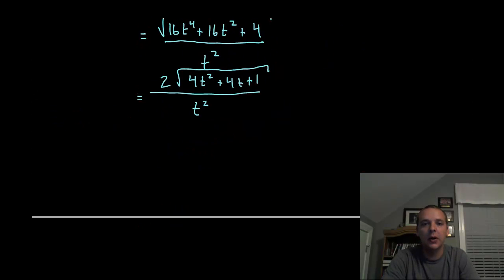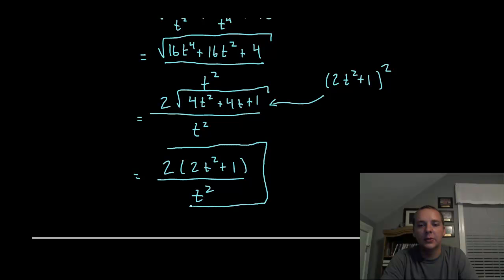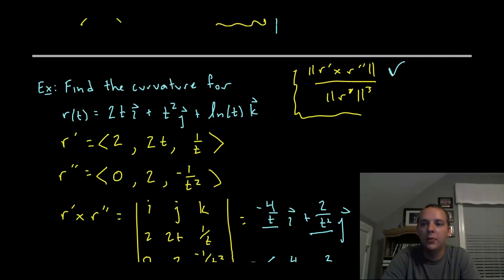And under the radical you would get 4t to the 4th plus 4t squared plus 1. The great thing is that is a perfect square. This factors as 2t squared plus 1 quantity squared. So with the square root that will cancel that square and we'll just get 2 times 2t squared plus 1 all over t squared. We're going to hold on to that. That's going to be our numerator.